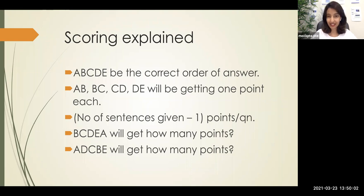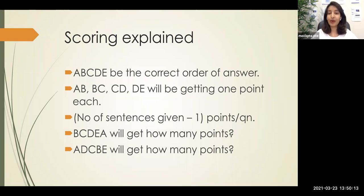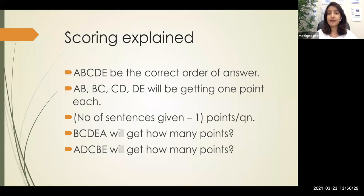From this, we can understand the computer doesn't care what is first, second, or third. It checks any two sentences that are supposed to be together — if they are adjacent in your answer, you get one point for that pair. This is why when solving reorder paragraph questions, you need to find connections between sentences, not worry about what position they go in.